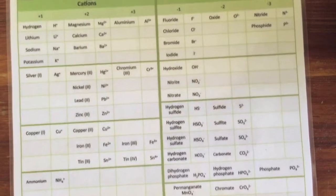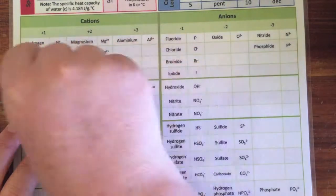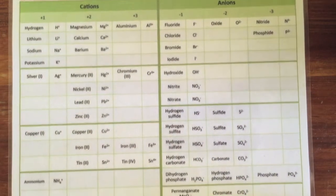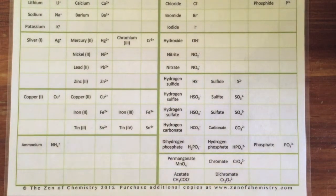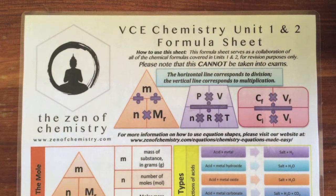People get really overwhelmed with learning their cations and anions. Essentially the way I've structured this is so that you can remember that you don't need to learn these top two blocks, and then efficiently remember the rest of them just by having a few little strategies that you can implement to make the job easier on yourself. I hope that's helpful. You can purchase this worksheet at www.zenofchemistry.com. Thanks.